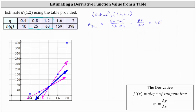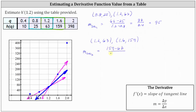Now we'll find the slope of the second secant line, or the secant line on the right, using the points (1.2, 63) and (1.6, 159). So m sub secant 2 is equal to the change in h of q divided by the change in q, which is the quantity 159 minus 63 divided by the quantity 1.6 minus 1.2. Simplifying, we have 96 divided by 0.4, which equals 240.